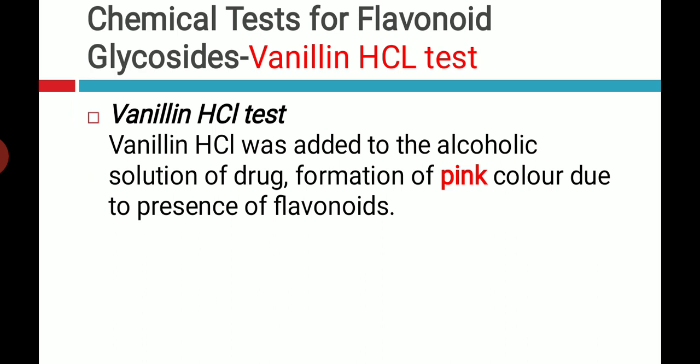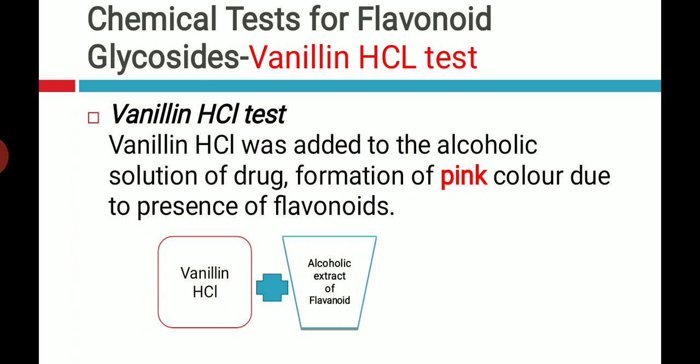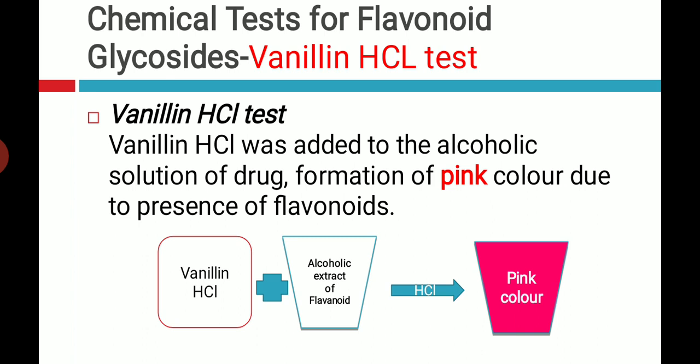The second test is called the vanillin chloride test, which is again used for the detection of the presence of flavonoids. In this, we have to take vanillin chloride and add it into the alcoholic extract which contains flavonoids. You have to identify different drugs which contain flavonoids and also find out the drug which contains the highest amount of antioxidant — search that on Google and write in the comment box. The mixture of alcoholic extract of flavonoid and vanillin chloride will give a pink color in the presence of HCl. That is the vanillin hydrochloride test.